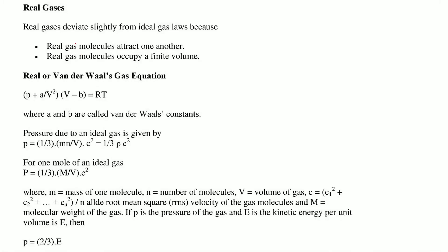Real gases somewhat deviate from ideal gas laws because they are not ideal. In real gases, molecules attract one another and the molecules occupy a finite volume. The van der Waals equation for real gases is: (P + a/V²)(V − b) = RT, where a and b are called the van der Waals constants.